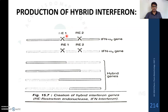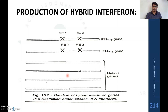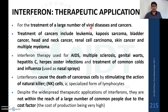This is the pictorial representation: the interferon alpha 2 gene and the interferon alpha 3 gene are both digested with restriction endonuclease enzyme. A hybrid gene is produced using DNA ligase enzyme, and this hybrid gene is then transferred into a host cell — E. coli — for the production of hybrid interferons.